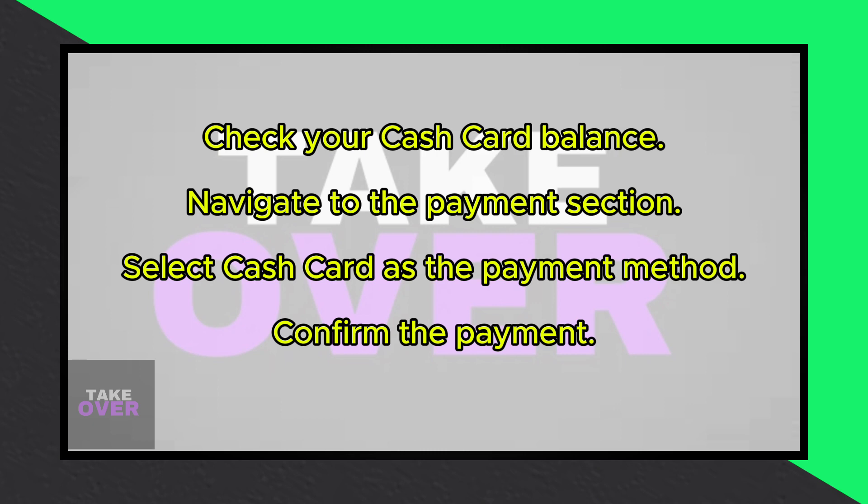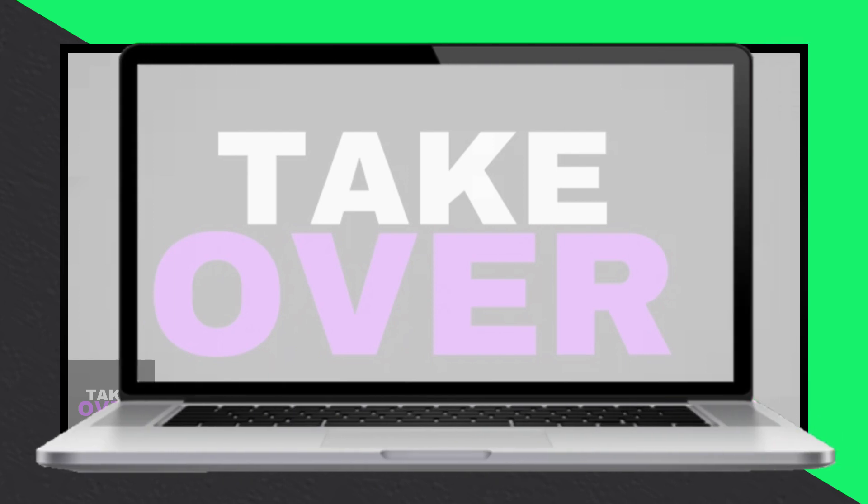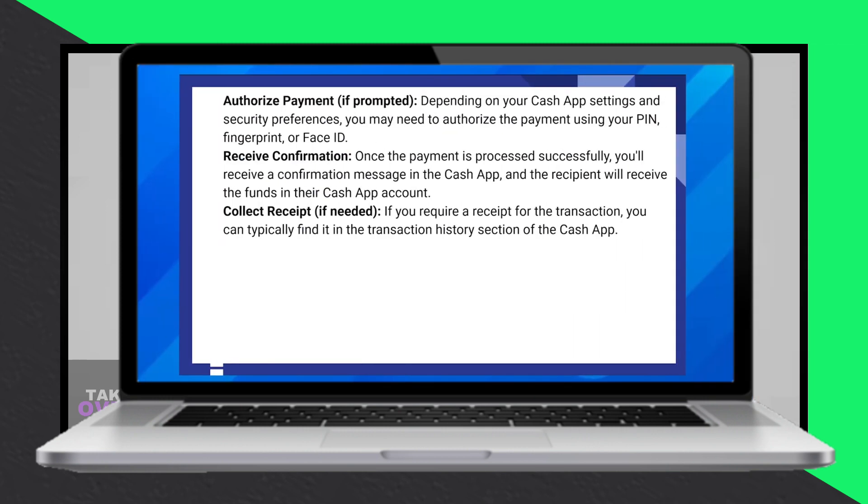Then confirm the payment. Depending on your Cash App settings, you may need to authorize the payment using your PIN, fingerprint, or Face ID. Once the payment is processed successfully, you'll receive a confirmation message in the Cash App, and the recipient will receive the funds in their Cash App account.